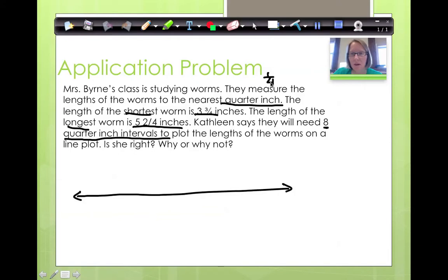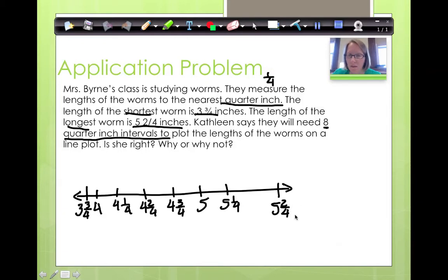Now, it's all going to be in quarter inch intervals. The shortest worm is 3 and 3/4, so we can start right here. The largest worm is going to be 5 and 2/4, so we're going to put that here. Let's count up. This would be 3 and 4/4, which would be 4. This would be 4 and 1/4, 4 and 2/4, 4 and 3/4. What's 4 and 4/4? That would be the same as 5. So we have 5 and 1/4, and then 5 and 2/4.